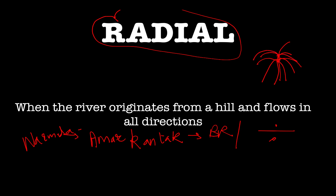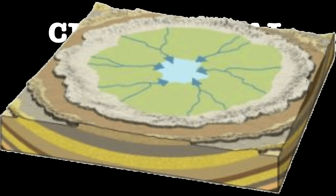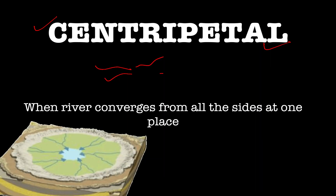A sharp question: if the radial pattern has rivers flowing outward from a central place, can there be a pattern where river systems terminate at a central place? Yes — this is the centripetal drainage pattern, where all river tributaries join at one place. If a question asks whether the radial and centripetal patterns are mirror images of each other formed at different stages of the river journey — the answer is absolutely true.